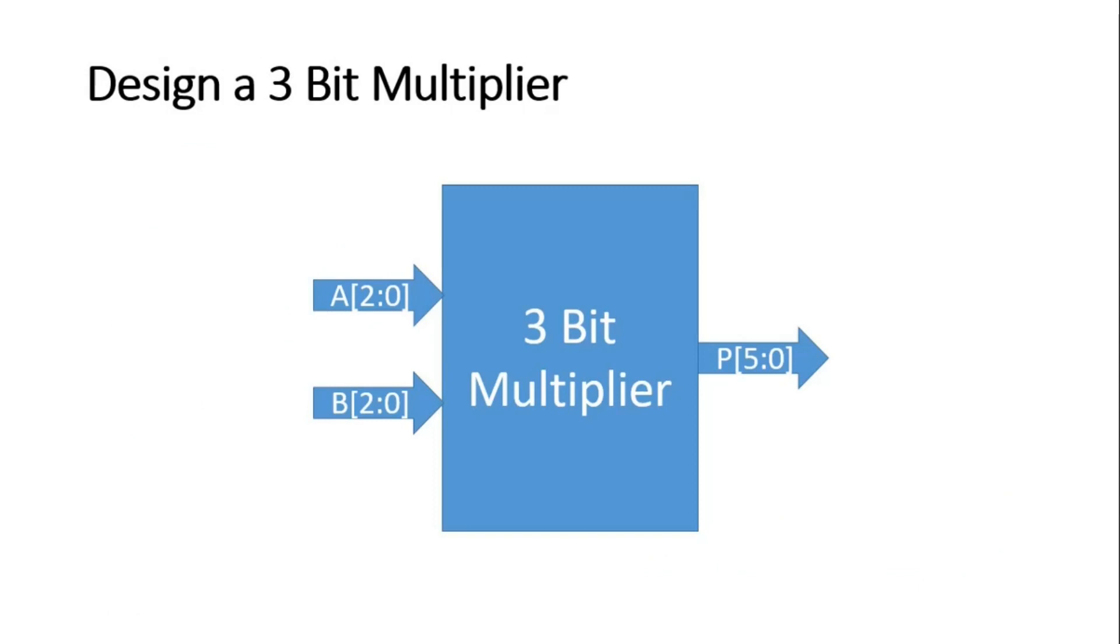Friends, now I have a question for you. It is just for your practice where you have to design a 3-bit multiplier. What do I mean by 3-bit multiplier? Here you will have two numbers, each number will have three bits, and the output product will be P which will have six bits. Try to design it and if you come to know its answer, please write it down in the comment section and I will reply there.